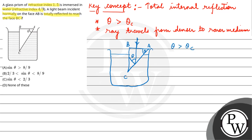That means it is greater than the critical angle because the refractive index of glass is more than the refractive index of water. So sine of critical angle will be equal to refractive index of water upon refractive index of glass, which is 4/3 upon 1.5.